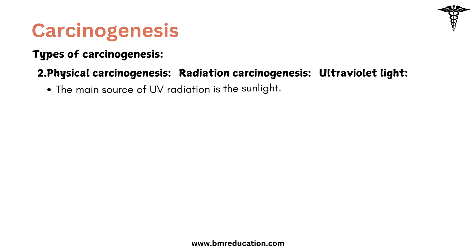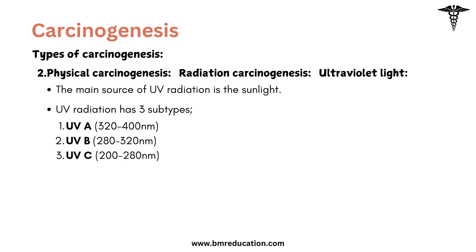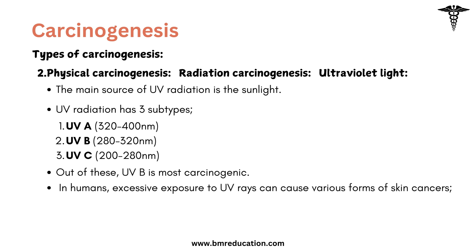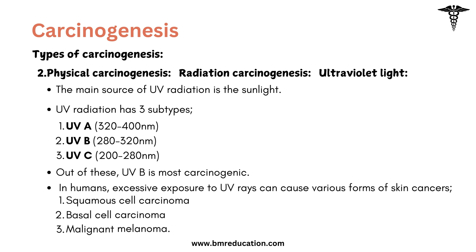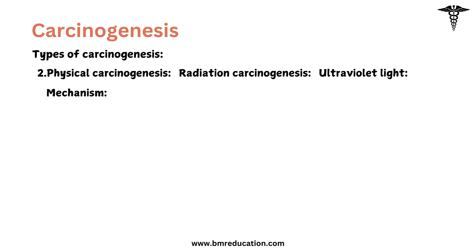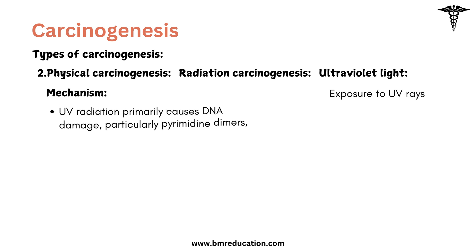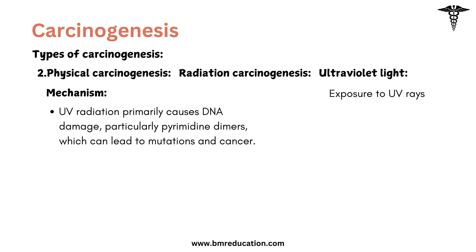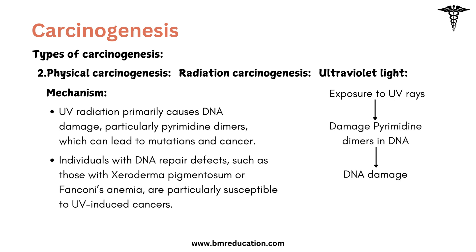The main source of ultraviolet radiation is sunlight. UV radiation has three subtypes: UVA, UVB, and UVC. Of these, UVB is most carcinogenic. In humans, excessive exposure to UV rays can cause various forms of skin cancers including squamous cell carcinoma, basal cell carcinoma, and malignant melanoma. Ultraviolet radiation primarily causes DNA damage, particularly pyrimidine dimers, which can lead to mutations and cancer. Ionizing radiation, including X-rays, alpha, beta, and gamma rays, can cause various cancers. The risk increases with higher doses and high linear energy transfer radiation like neutrons and alpha rays.